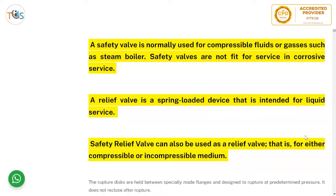A safety valve is normally used for compressible fluids or gases, such as in a steam boiler. Safety valves are not fit for corrosive service. A safety valve pops up suddenly because gases cannot be under excess pressure for too long; otherwise there is a danger of explosion and failure. So the safety valve's nature is to pop open immediately once the set pressure is reached.